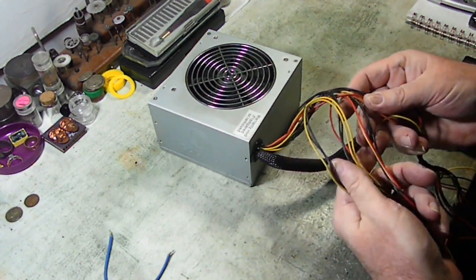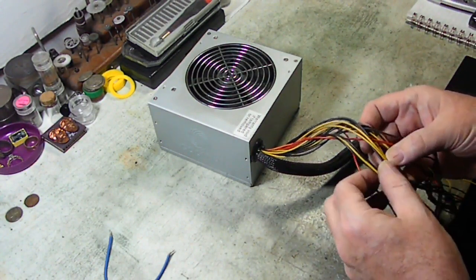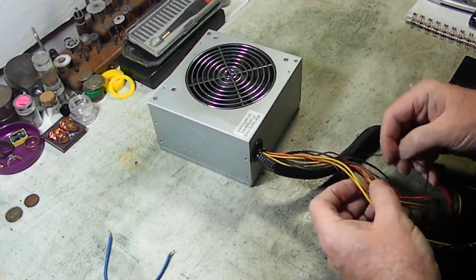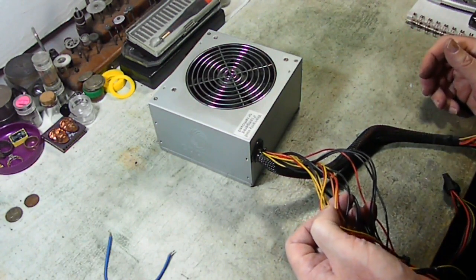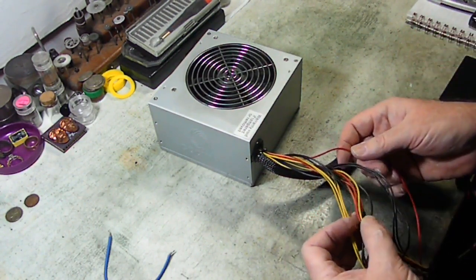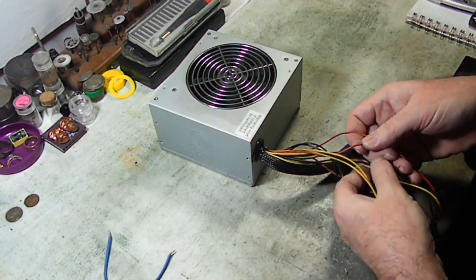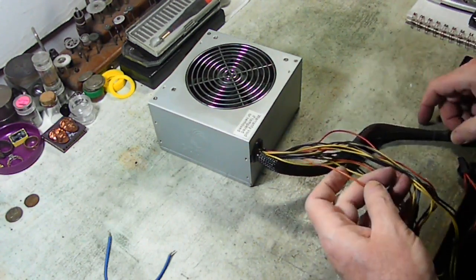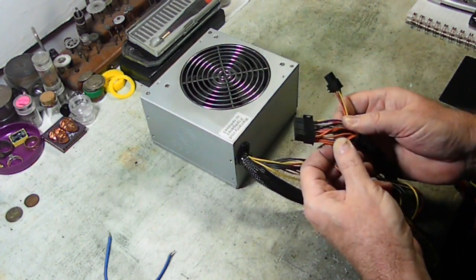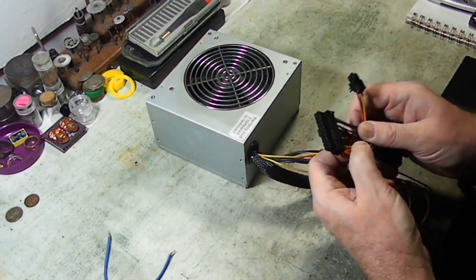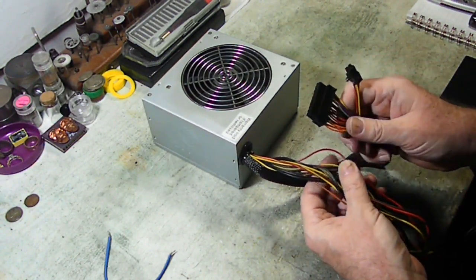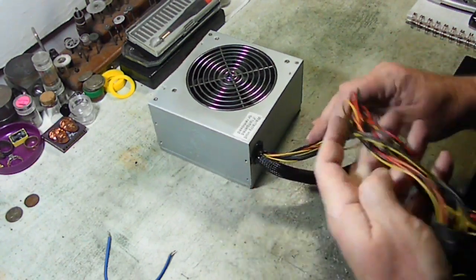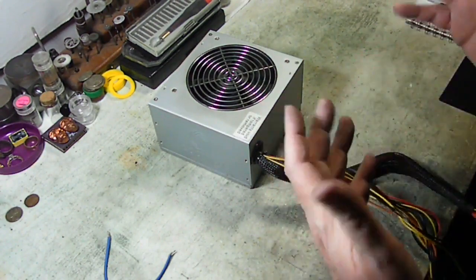We know the black wires are all grounds. The yellow wires, every yellow wire here, all these yellow wires coming out of here are putting out 12 volts DC. Your red wires, all your red wires that are coming out of here, the reds are putting out 5 volts. And then you have orange wires, and all the orange wires are 3 volts.